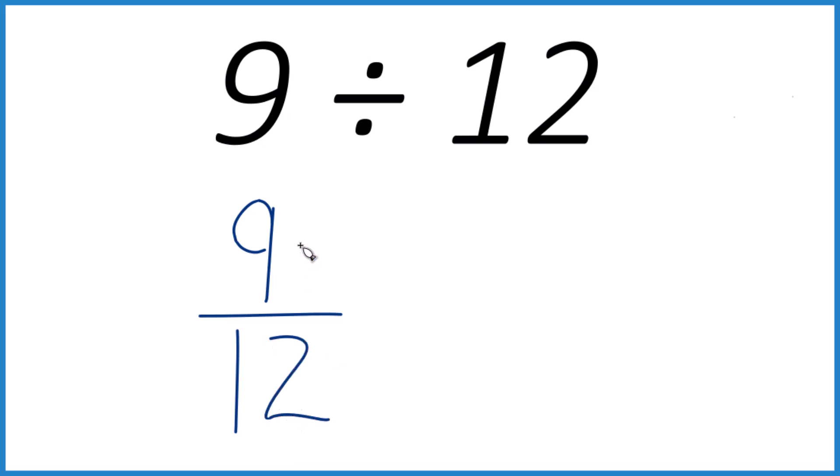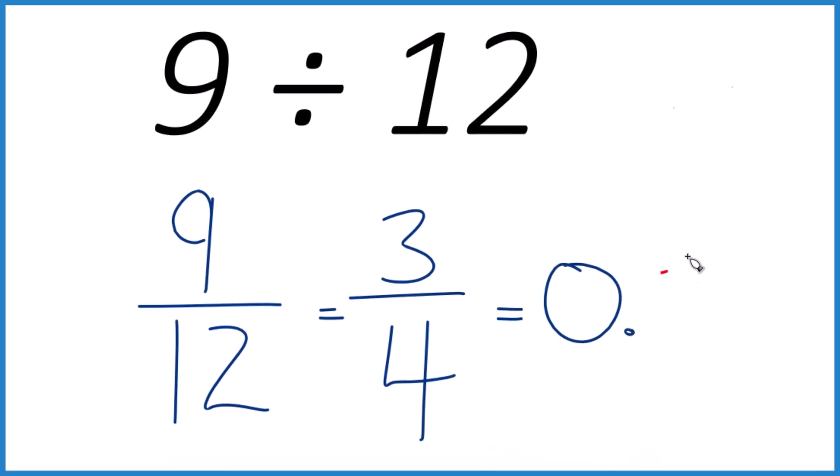How many times does 12 go into 9? And you could simplify this down to 3. 3 goes into 9 three times, 3 goes into 12 four times, 3 fourths. And that does equal 0.75.